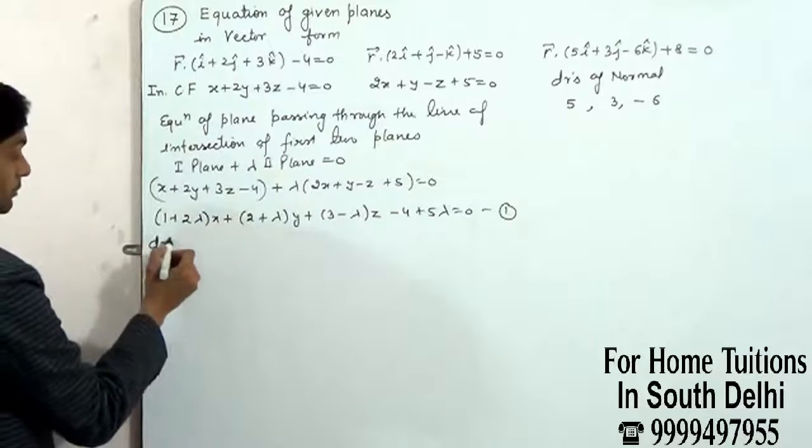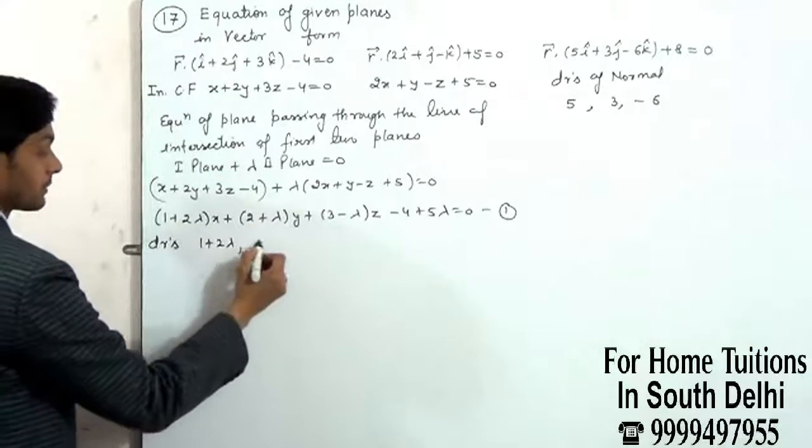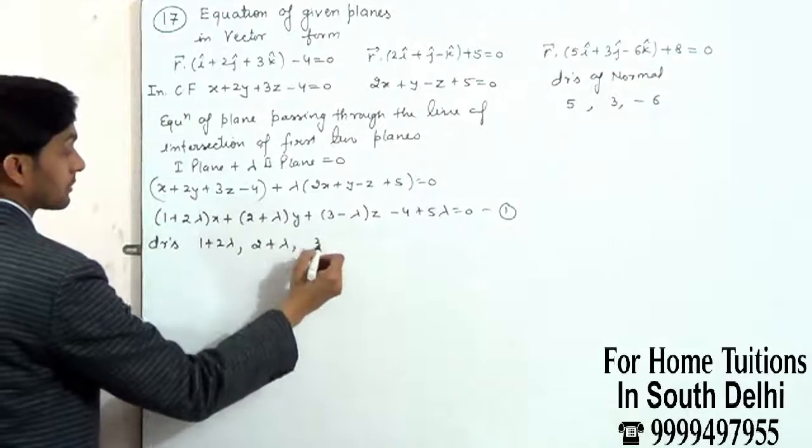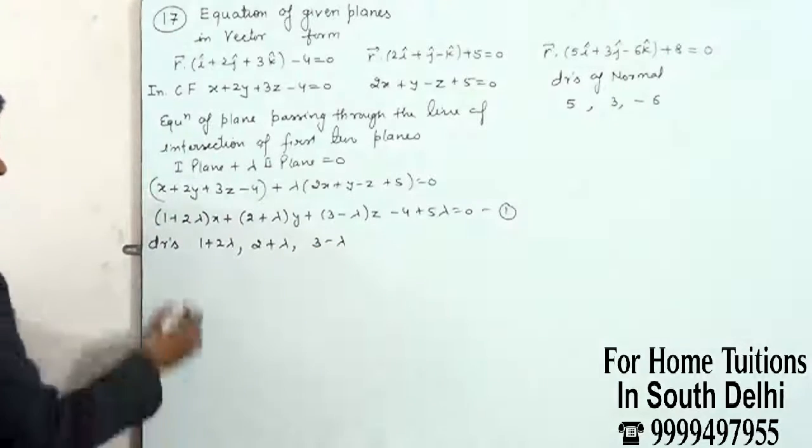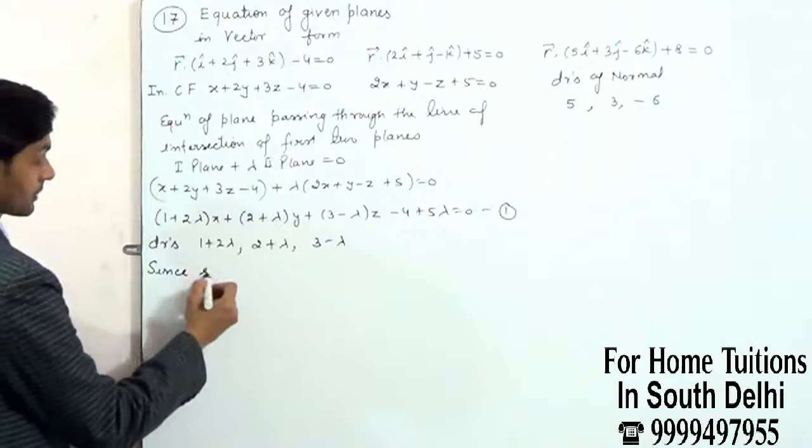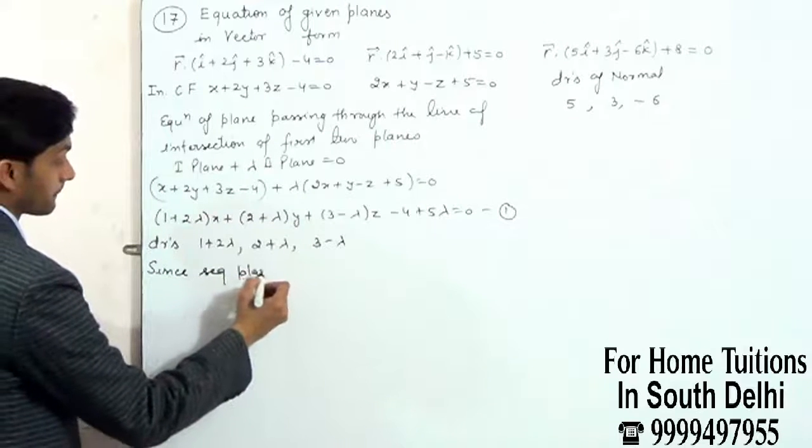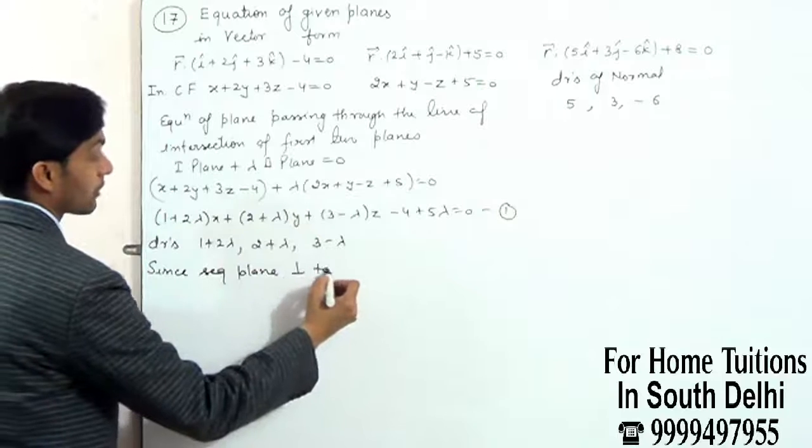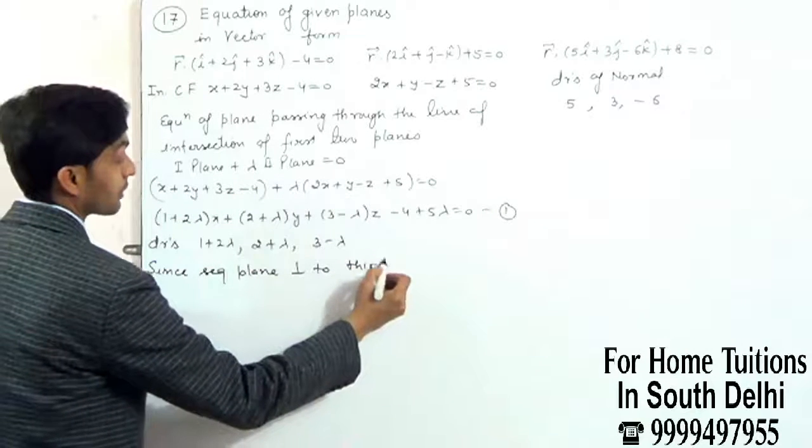This direction ratio is 1 plus 2 lambda, 2 plus lambda, 3 minus lambda. Since required plane is perpendicular to third plane,